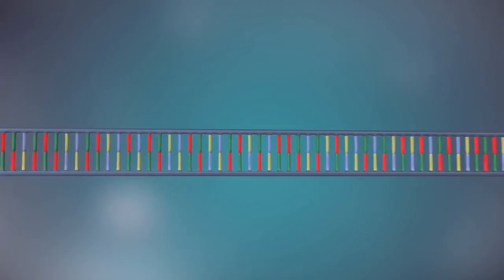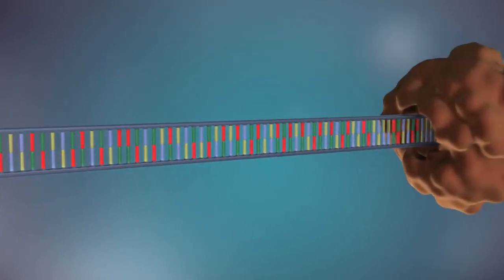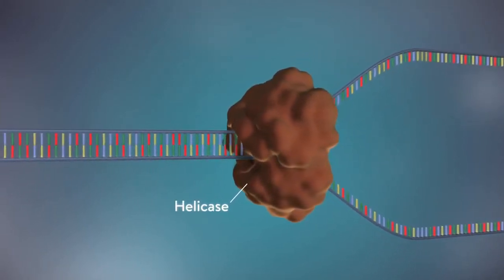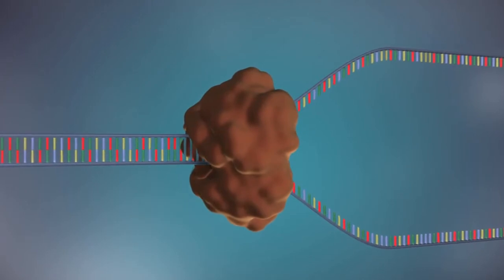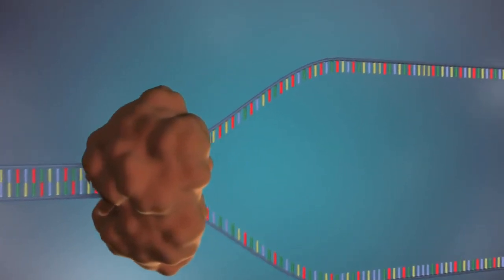The first step in DNA replication is to separate these two strands. This unzipping is done by an enzyme called helicase and results in the formation of a replication fork. The separated strands each provide a template for creating a new strand of DNA.